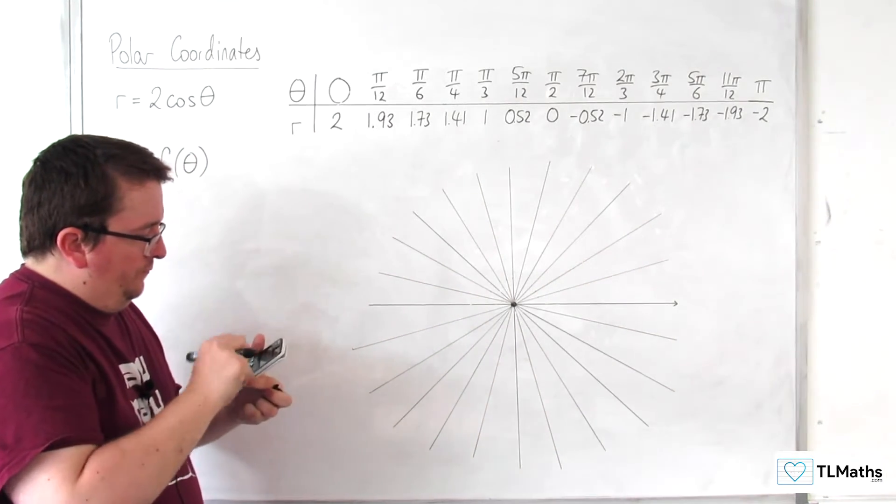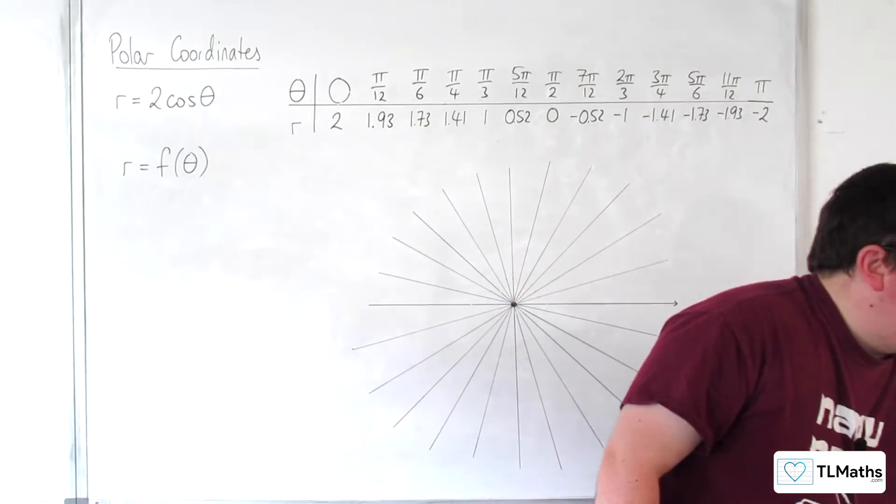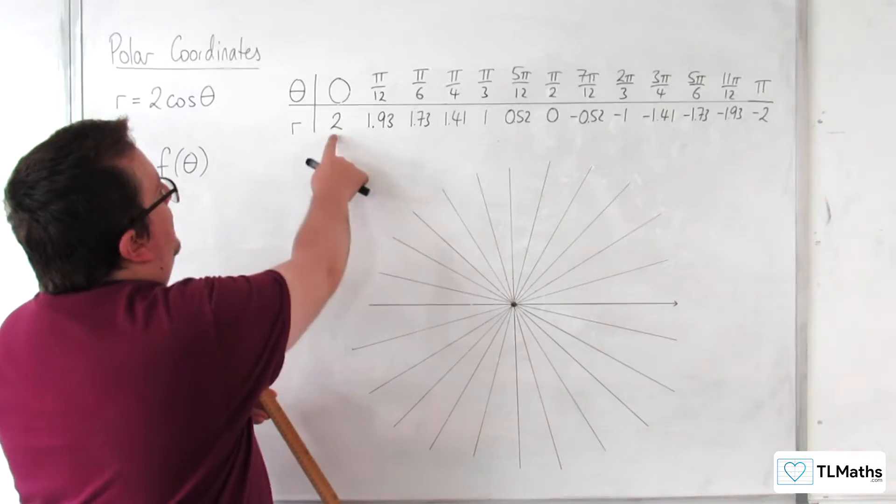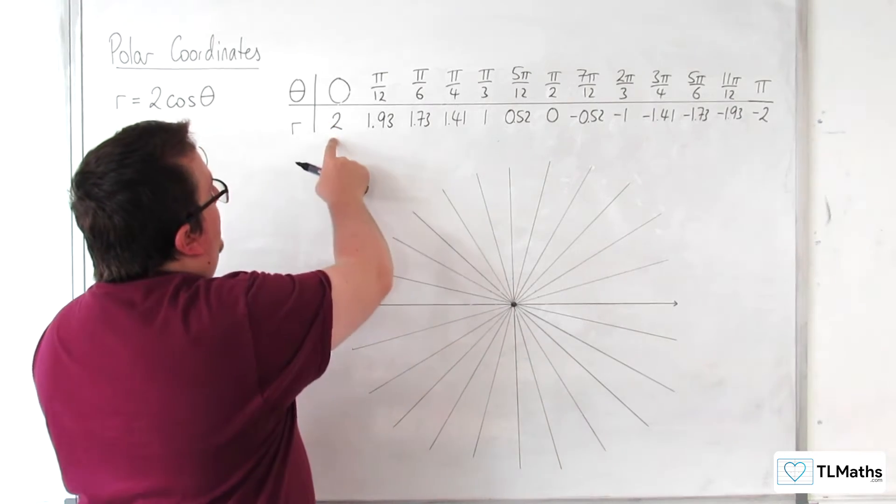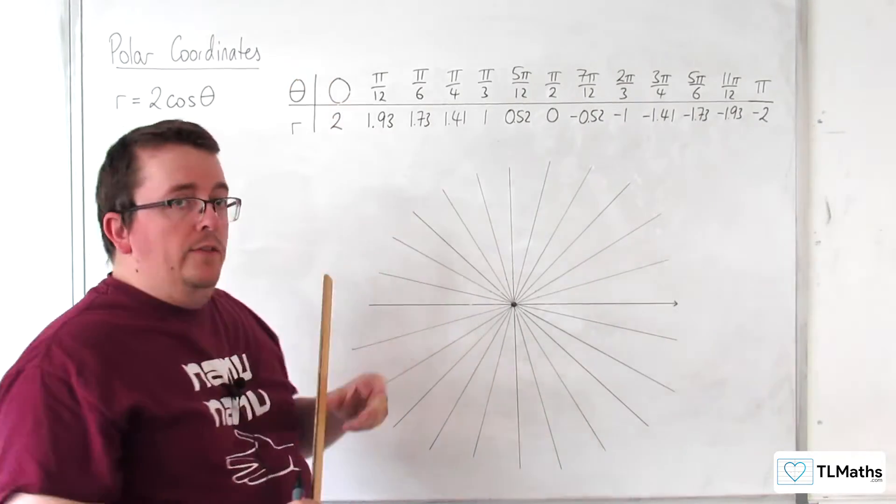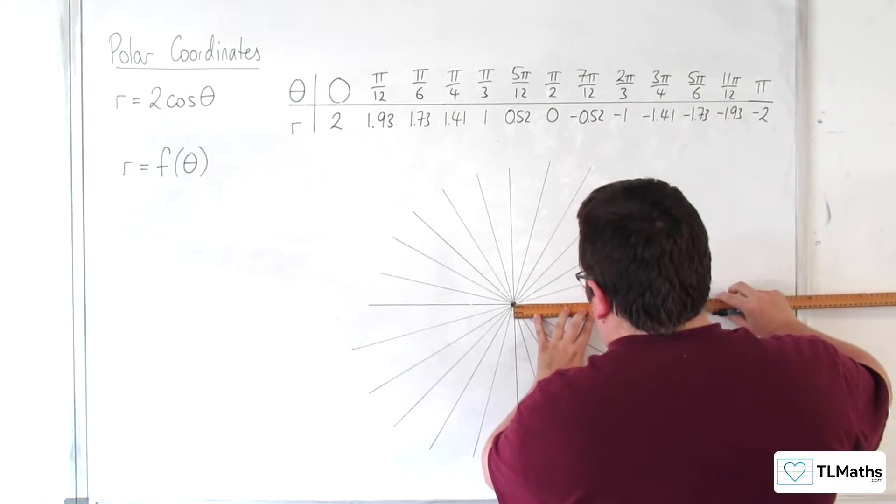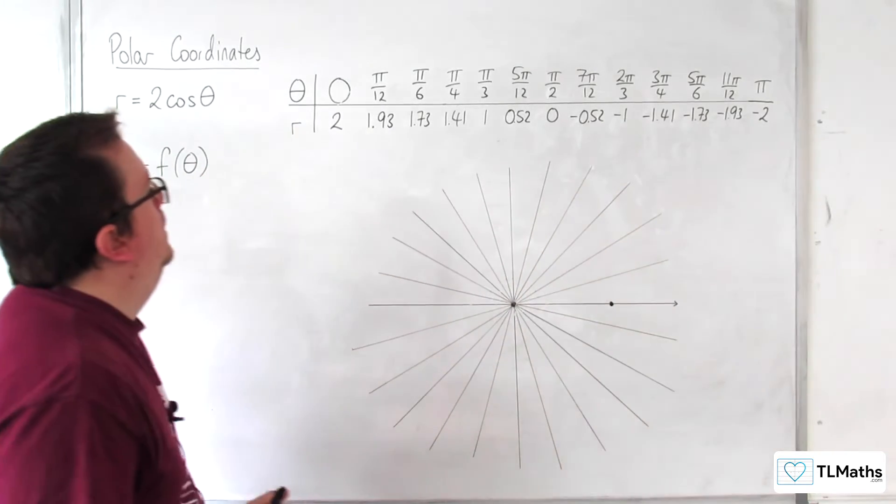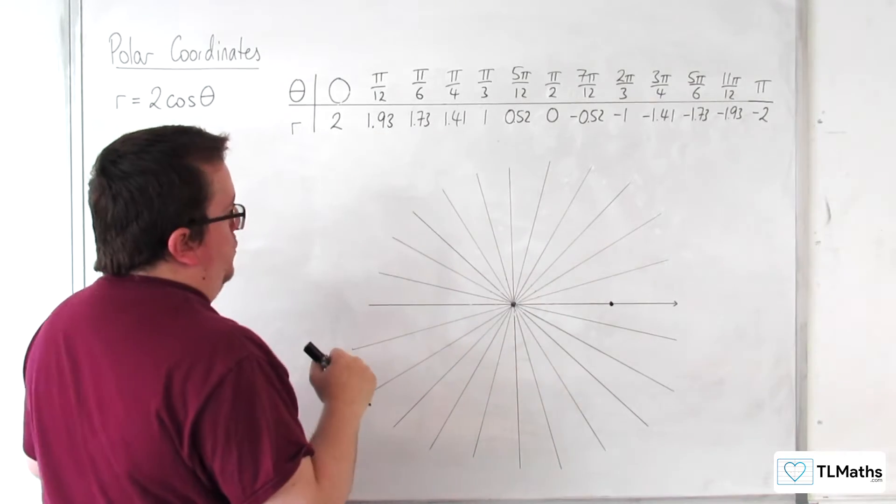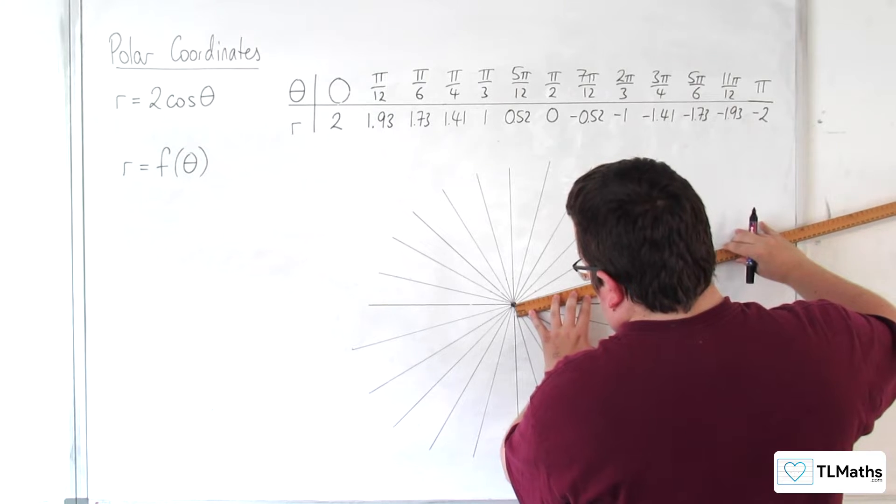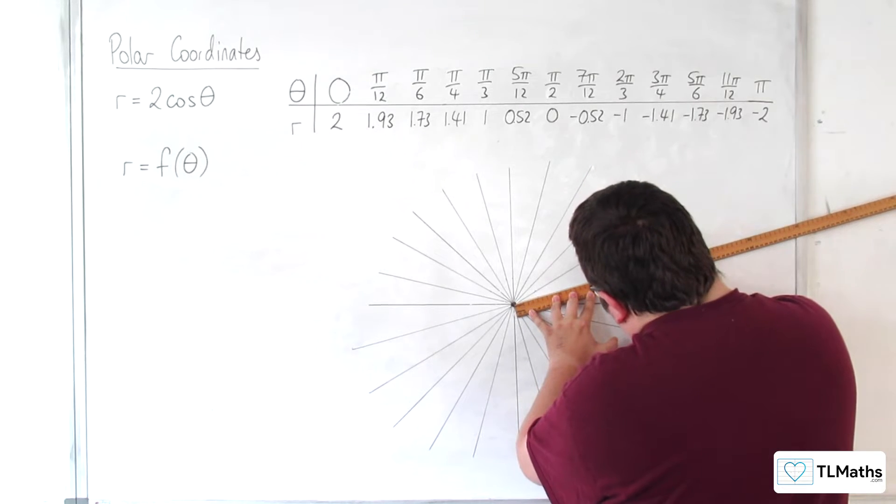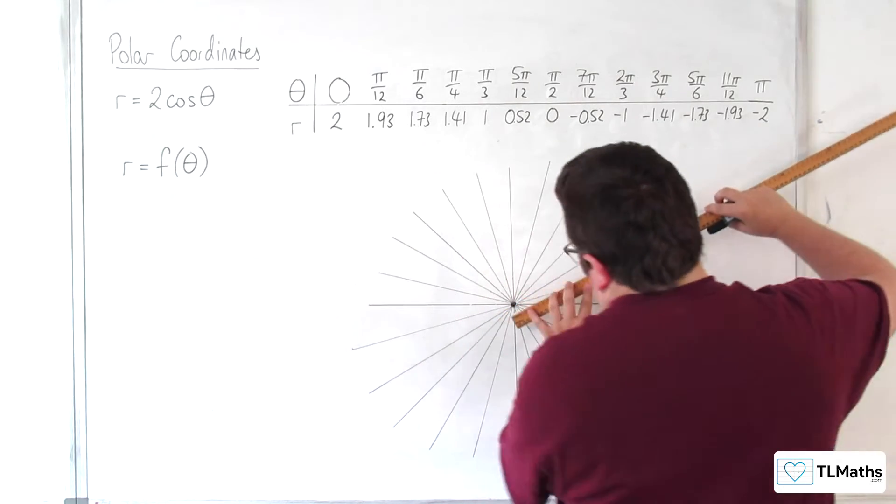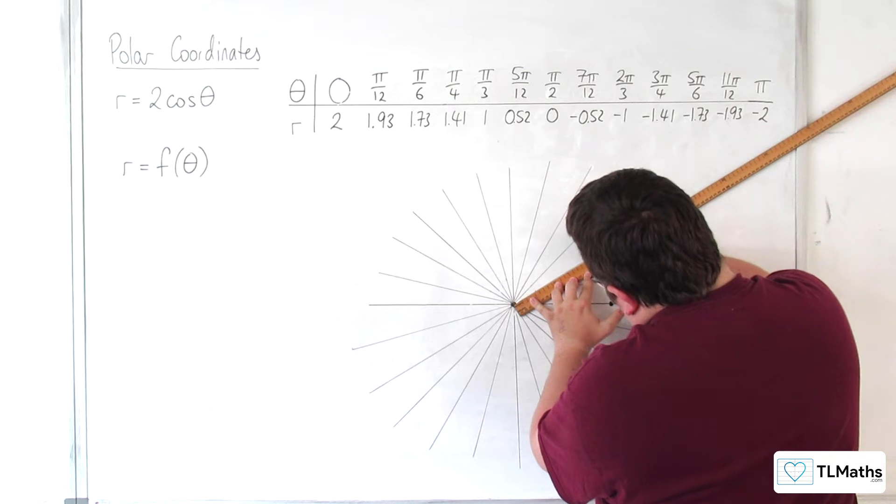So let's see what we get when we plot those points. I'm going to try and do this accurately, using 20 centimeters for that. So I'm going to start off 20 centimeters away from the pole with the angle 0, or a length of 2 rather. So that's my first point. Then I've got pi over 12, 1.93, so about 19.3 centimeters, something like there.